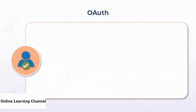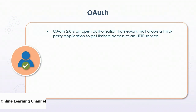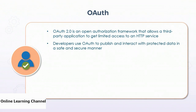Around 2005, when SAML 2.0 became an accepted standard, the iPhone was being developed in secret. When it launched about 18 months later, it was a game-changer. Instead of creating SAML 3.0 to accommodate apps, rapid development, and newer formats like JSON, developers went a different direction. One of those directions was OAuth — open authorization. OAuth 2.0 is an open framework that allows third-party applications to get limited access to an HTTP service. Developers use OAuth to publish and interact with protected data in a safe and secure manner.